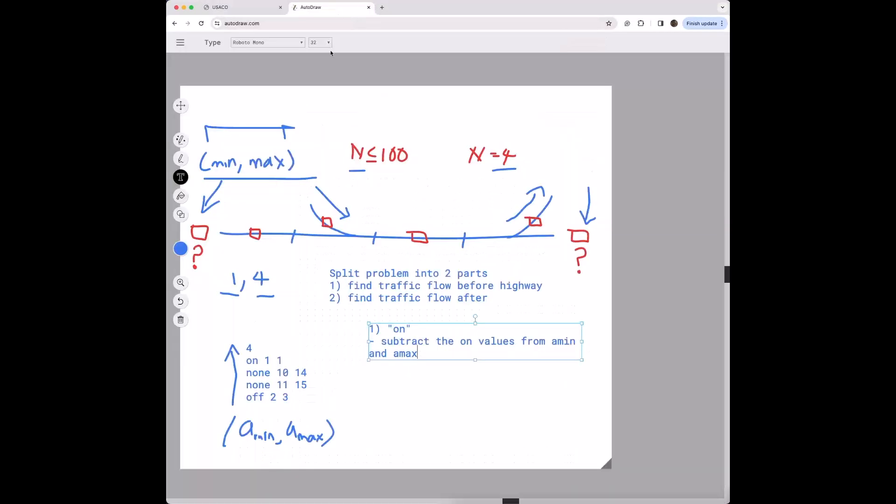I guess the way they put it in the sample case was to make it a little bit easier, but it's not always going to be the same min and max for the on. So I guess let's try to think of what would happen if instead of one and one and one it was one and two.